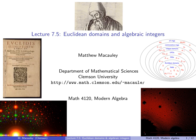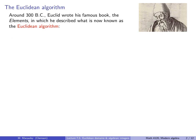Welcome to Lecture 7.5, Euclidean Domains and Algebraic Integers. We first encountered Euclid and his book, The Elements, when we studied ruler and compass constructions. And now we'll revisit it for something else that it contains. Recall that he wrote this around 300 BC, and in it he described what is now known as the Euclidean algorithm.